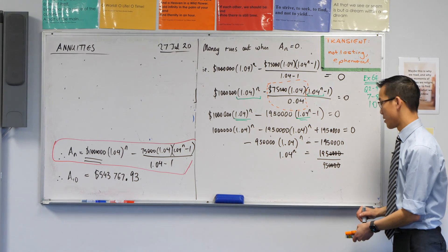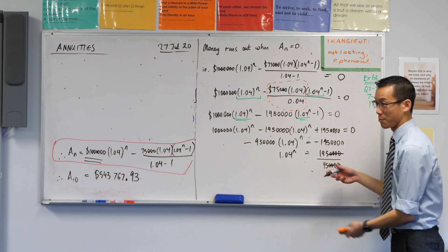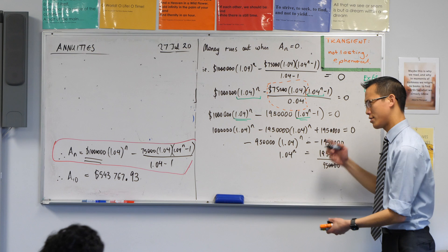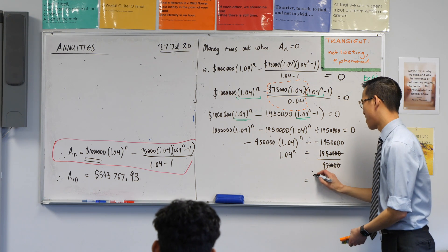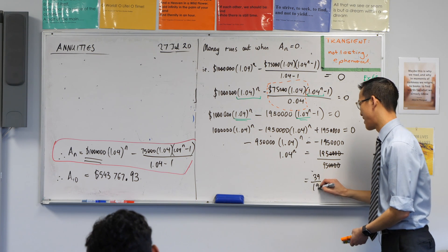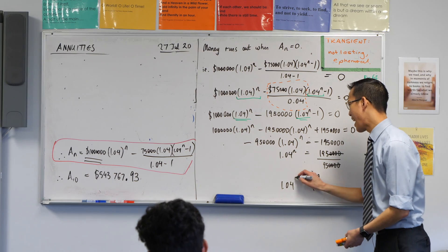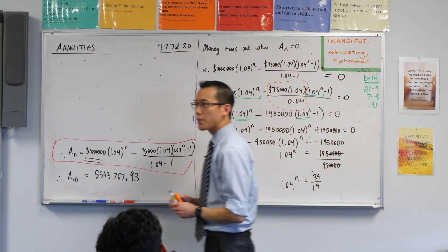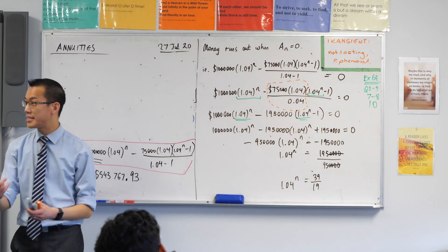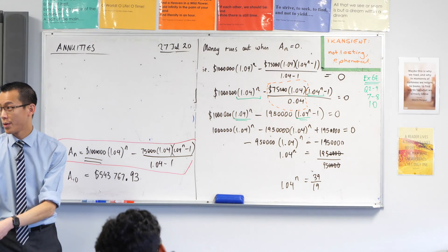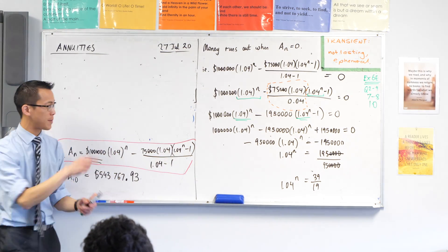39 over 19. Yeah, you can put that into your calculator again. Yeah, just off the top of your head. 39 over 19. And we've seen this before. We've seen it before where the unknown is in the index. What do we got to turn this into? A log. Very good. I've got the space already.